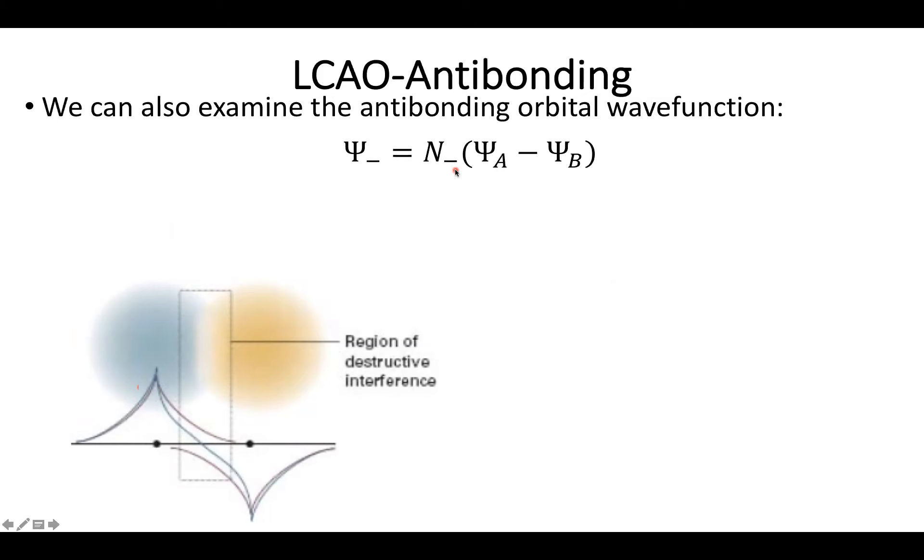Like last time, we examined our bonding orbitals through the probability density. We can do that again here, where we take the square of our wave function, which lets us pull out a normalization constant. Then we have our three major regions: the density around A, the density around B, and this time instead of adding a constructive region, we're subtracting out this overlap integral.